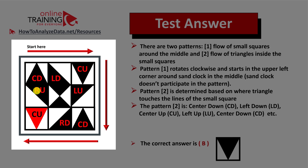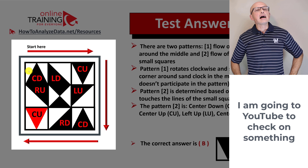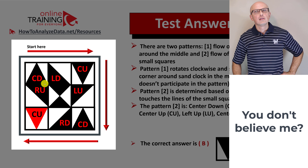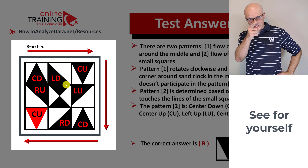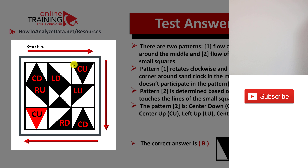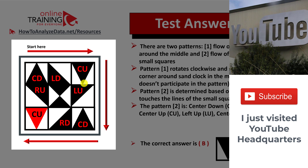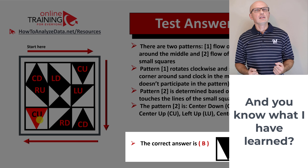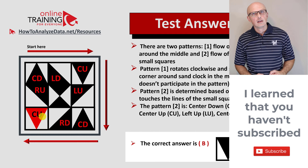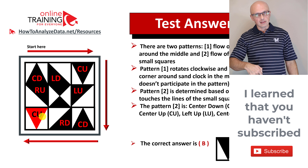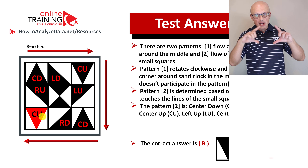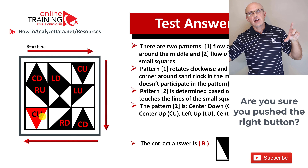Pattern two is determined based on where a triangle touches the lines of the small square. For example, the triangle in the upper left corner touches the lines at the top and at the bottom. The next one touches on the left and down. The following one touches up and in the center. Continuing this pattern determines the missing item, which is choice B. Please check out my ebook in the description for more practice problems.